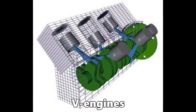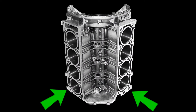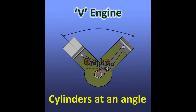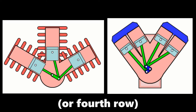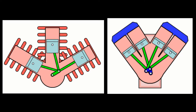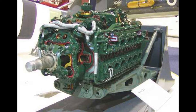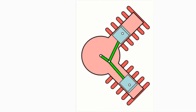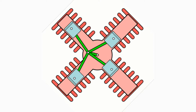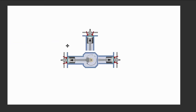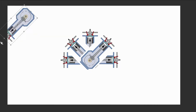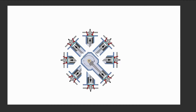V engines have the cylinders offset into two planes along the crankshaft — it looks like a V when viewed from the front. If you add a third row of cylinders, you get a W engine. If you need to go even bigger, just mirror the V engine across the crankshaft to the opposite side and you get an X engine. If you add more rows into a big circular shape, you get a radial engine.